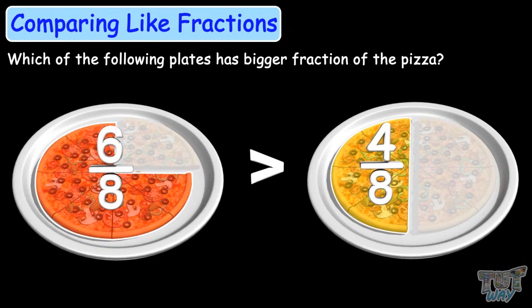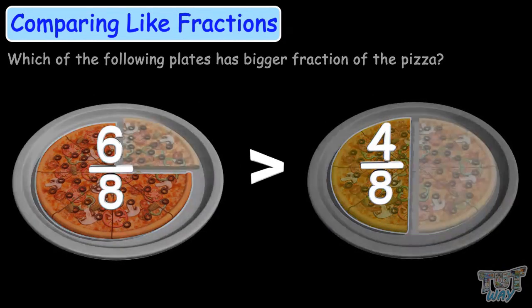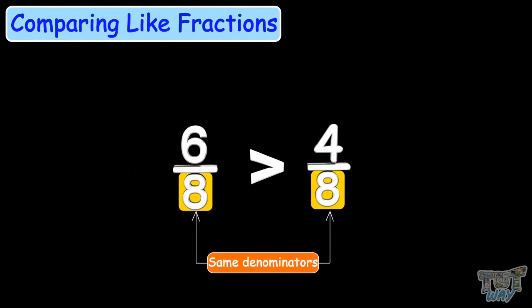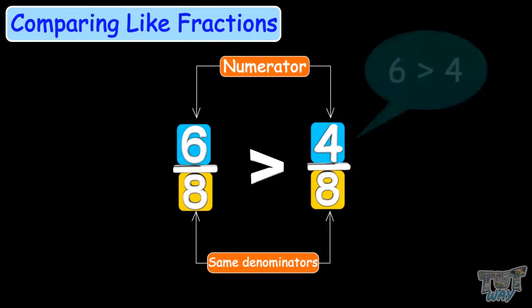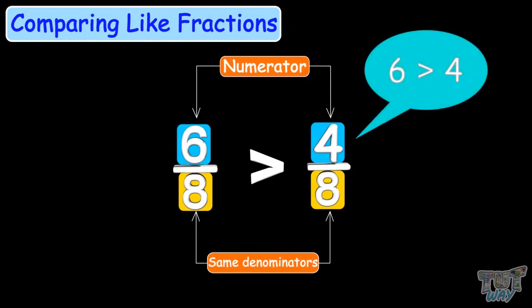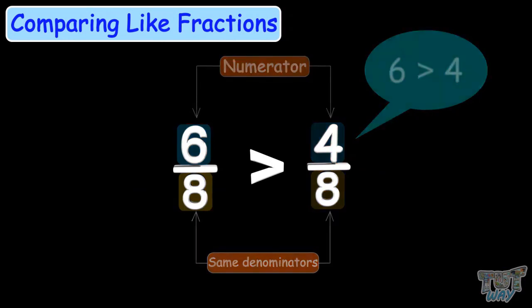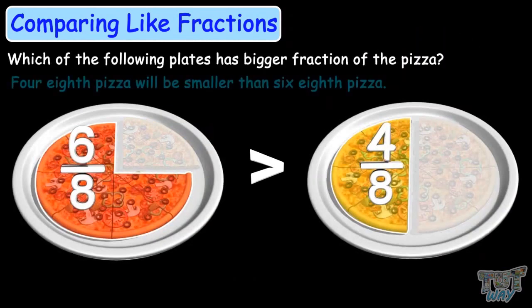You can also notice that these are like fractions, having the same denominators. So you just need to compare the numerators to compare the fractions. 4 is smaller than 6, so 4 by 8 is smaller than 6 by 8. So 4-eighth of the pizza will be smaller than 6-eighths of the same pizza.